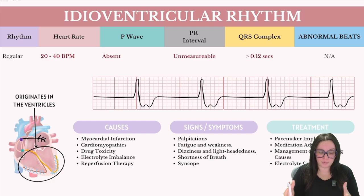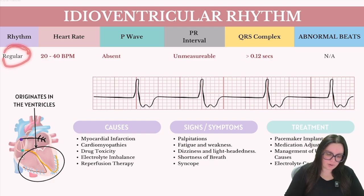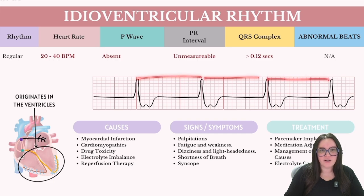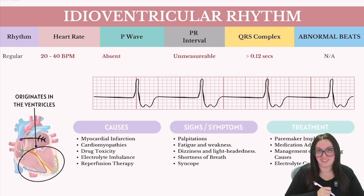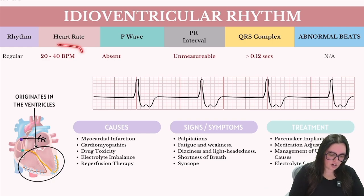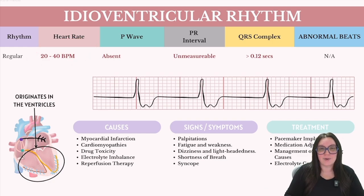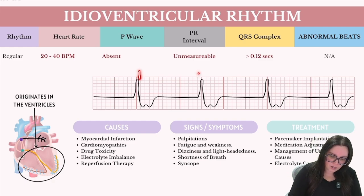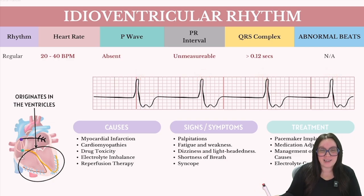Let's talk about how we're going to break this rhythm down, starting with the rhythm itself. This rhythm is always going to be regular — if I was to march out between our R-to-R waves, it's going to fall in the exact same place every single time. The heart rate is going to be very slow because of the intrinsic rate of our Purkinje fibers — approximately 40 beats per minute with this particular idioventricular rhythm.